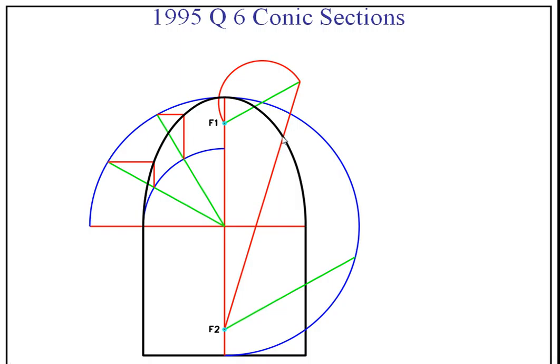Another way you could have done that is from f2 here. If you continue this line out, put your compass point here, swing this out as far as here, join that back to f2. That's going to give you the same point of contact. It doesn't matter where you apply the principle, it's always going to give you the same result.